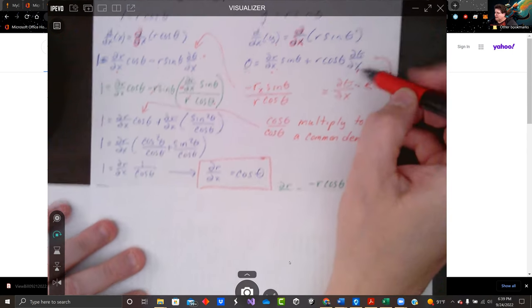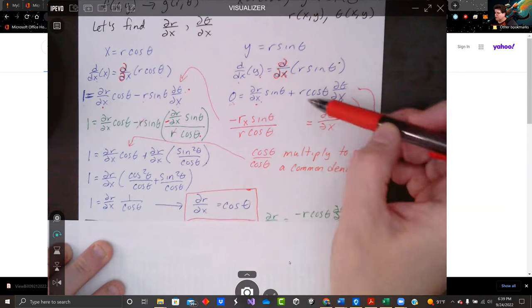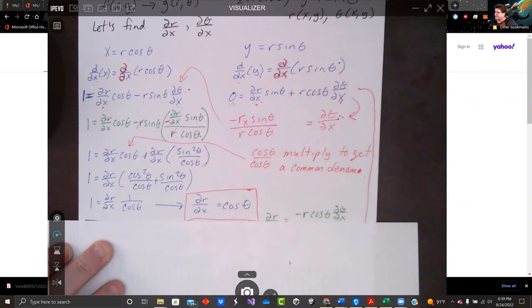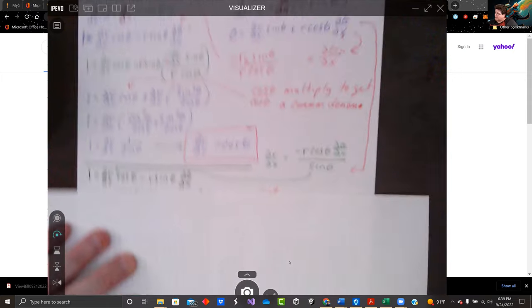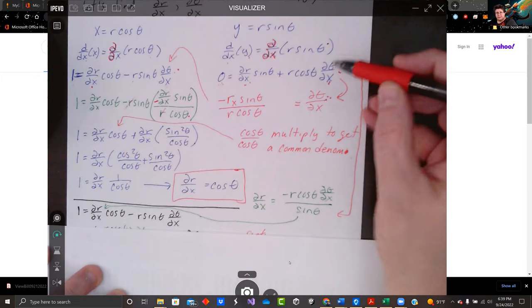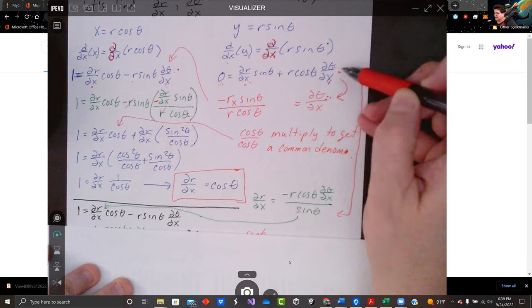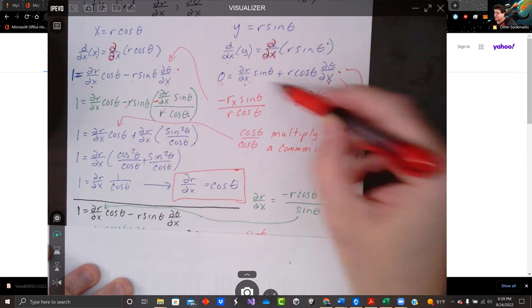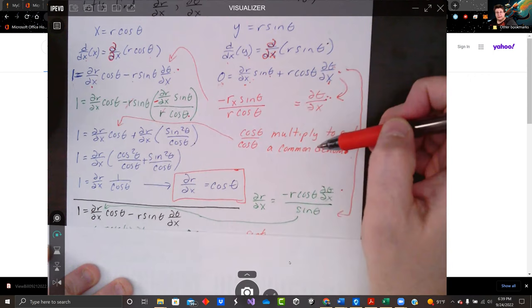Let's do the same thing. We're going to... Up here, we solved for d theta and replaced it over there. Now we'll solve for dr and replace it over there to get d theta. So I do that here. I solve for dr/dx. Let me bring it down where you can see it. So I subtract r cosine theta d theta dx over to the other side. So it's negative. And then I divide through by the coefficient sine theta.